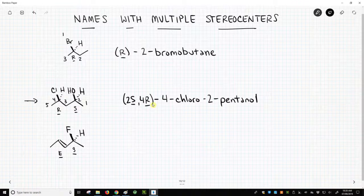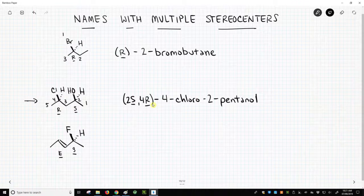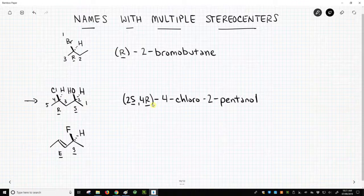Now, alkenes can also be stereocenters. They're not chiral centers, but they are stereocenters. So we have to specify E and Z. The rules are a little bit different here. So let's first give the name for this last molecule on the screen.